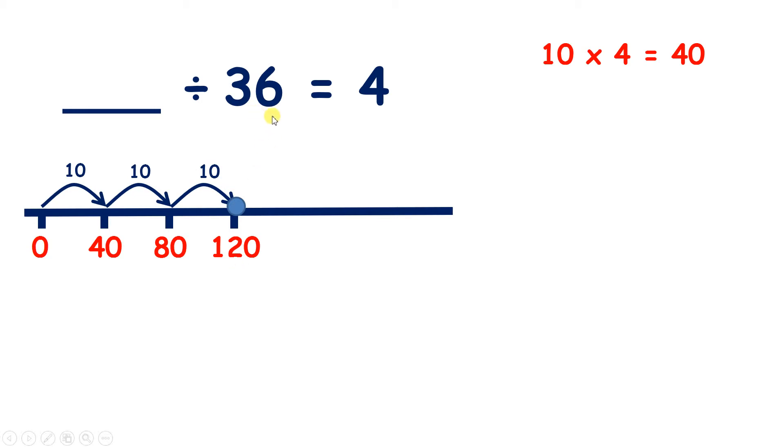So now we just need to count 6 fours. 5 times 4 is 20, so if we add 5 fours, if we add 20, that takes us to 140, and then if we count on one more four, that takes us to 144.